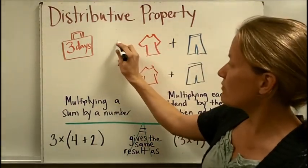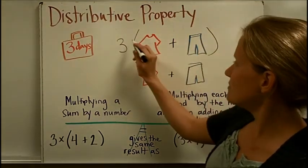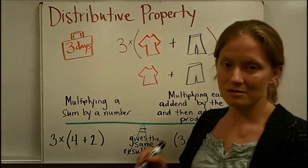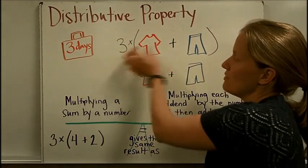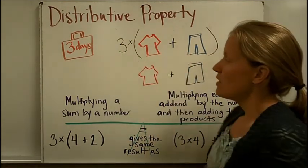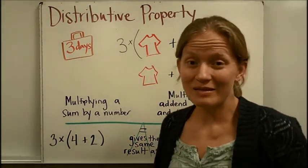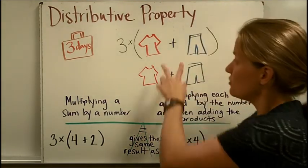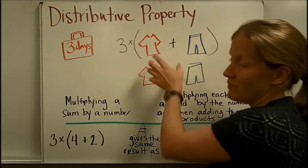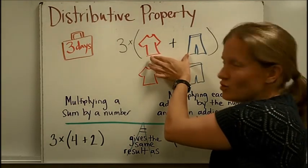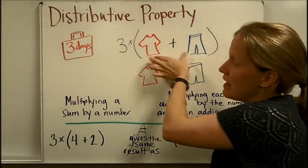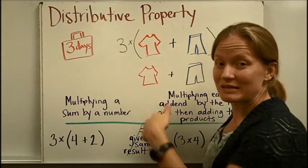So in math, we would write that like three times the shirts and the pants. So we need, this is saying, we need three outfits together. Well, you could find out how many pieces of clothes that is in two different ways. You could add together one shirt and one pant to get two, so that's two pieces of clothes in an outfit, and then multiply that by three to get six.